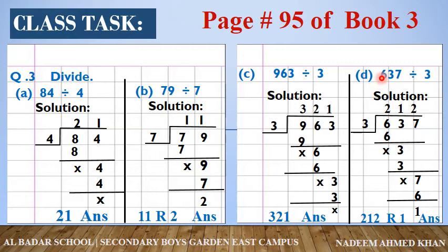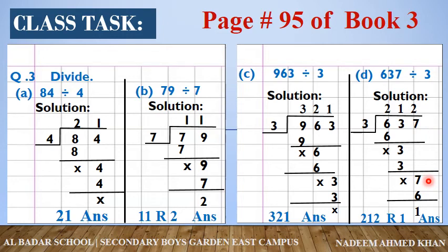D question है: 637 divided by 3। Divide की sign बनाएं — 3 लिखा और 637 लिखा। 3 का table: 3 × 2 = 6 — 6 लिख दीजिए, 6 में से 6 subtract करें — कुछ नहीं बचा। 3 bring down: 3 × 1 = 3 — 3 में से 3 subtract करें — कुछ नहीं बचा। 7 bring down: 3 × 2 = 6 — 7 में से 6 subtract करें — remainder 1। Quotient 212, remainder 1 — यह हमारा answer है।